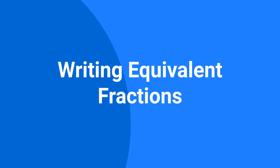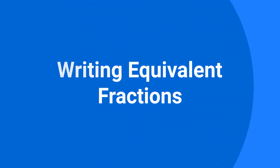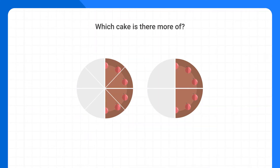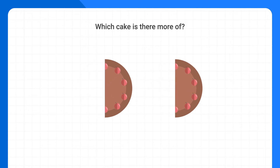Today we'll be learning how to identify and how to write equivalent fractions. Let's pretend we saw these two birthday cakes and wanted to know which cake is there more of. Well if we look at the cakes and ignore all of the slices, you can see we actually have the same amount in each cake.